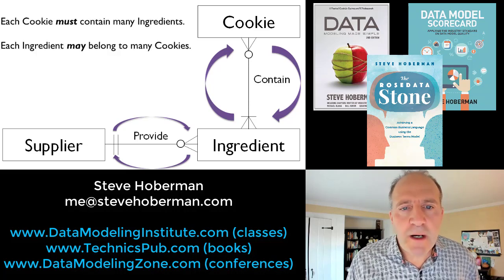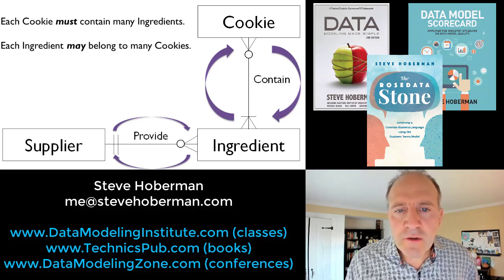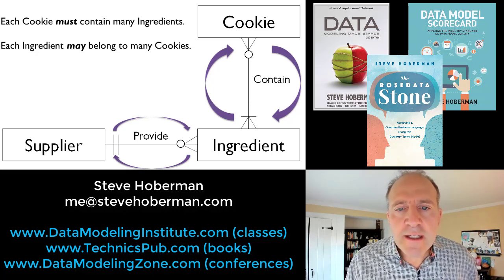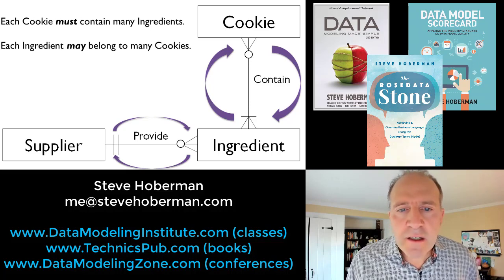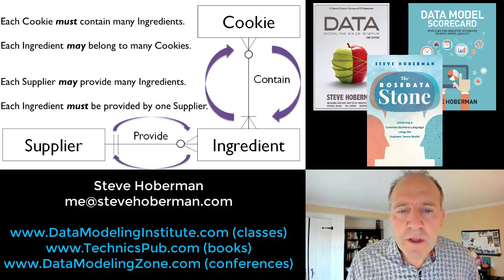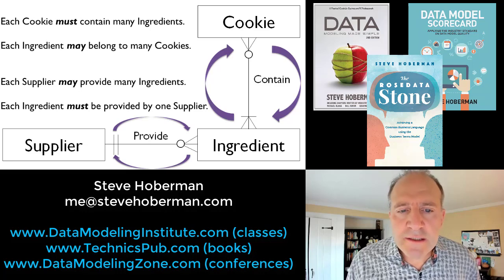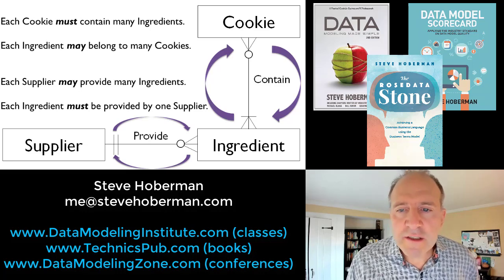So here on this model: each cookie must — we say 'must' because there's a one near ingredient — contain many ingredients. Each ingredient may — we say 'may' because there's a zero here near cookie — may belong to many cookies. Each supplier may provide many ingredients. Each ingredient must be provided by one supplier.